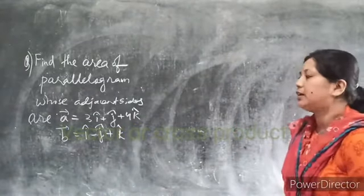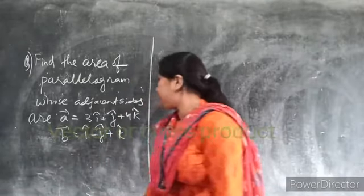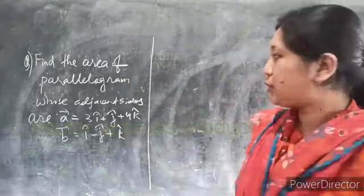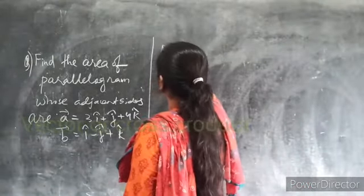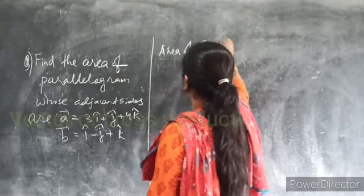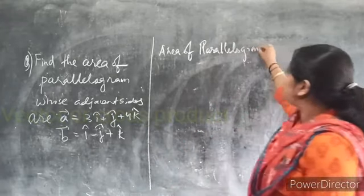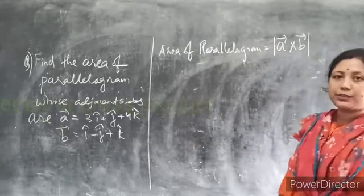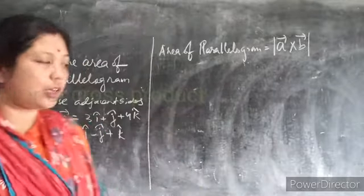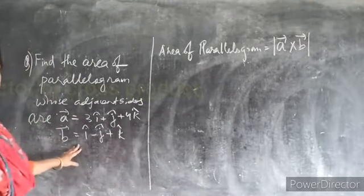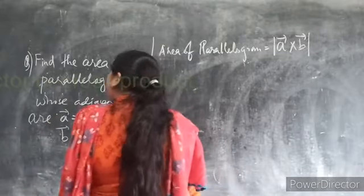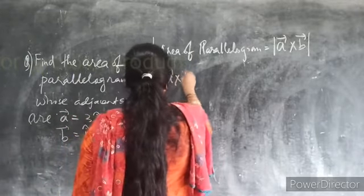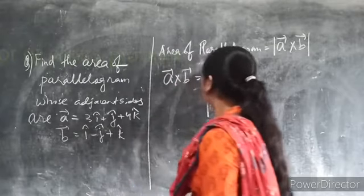Let us see another question: find the area of a parallelogram whose adjacent sides are given as vector A equal to 3i cap plus j cap plus 4k cap, and B vector equal to i cap minus j cap plus k cap. The formula for area of a parallelogram is the magnitude of A cross B.